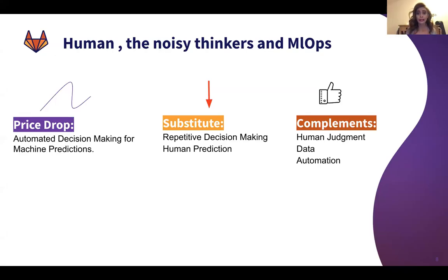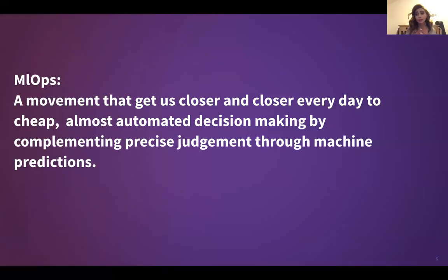To put it all together, MLOps — the combination of AI and DevOps — the price drop is considered for automated decision making and machine predictions. The substitute, which is the coffee, is the repetitive decision making for human prediction. And the complements are human judgment, data, and automation. So a simple definition of MLOps: it's a movement that gets us closer and closer every day to cheap, almost automated decision making by complementing precise judgment through machine predictions.